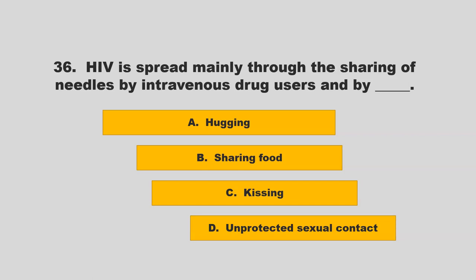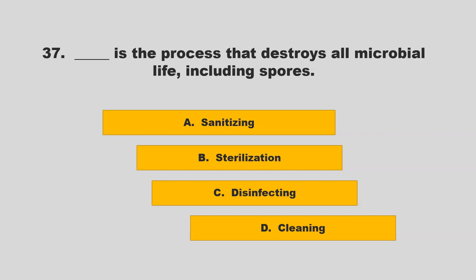HIV is spread mainly through the sharing of needles by intravenous drug users and by blank. Options: hugging, sharing food, kissing, or unprotected sexual contact. The correct answer is D: unprotected sexual contact.